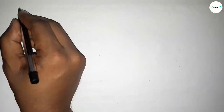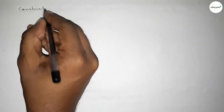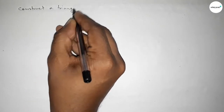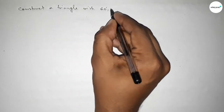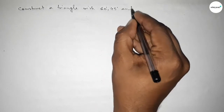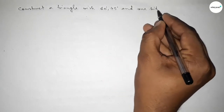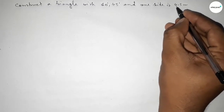Hi everyone, welcome to SISR Classes. Today in this video we have to construct a triangle with two given angles, 60 degrees and 45 degrees, and one given side of 4.5 centimeters. Let's start the video.